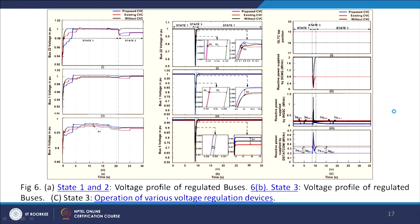In the simulation results, the blue line represents the proposed CVC, the red one is the existing CVC, and the black one is without CVC. We compare how the system behaves without a CVC scheme, with the existing CVC scheme, and with the proposed one — all three have been compared.